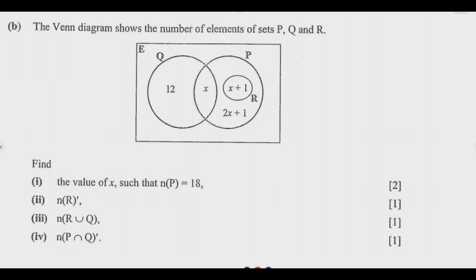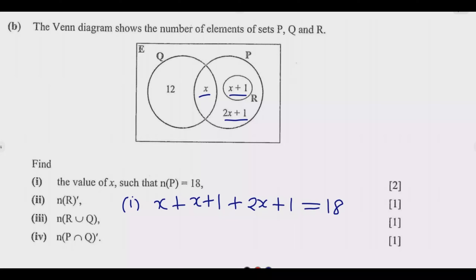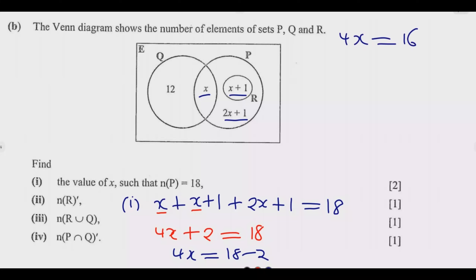For Roman numeral 1, we add the elements inside P and equate to 18: X + (X + 1) + (2X + 1) = 18. Collecting like terms: 4X + 2 = 18, so 4X = 16, and therefore X = 4.